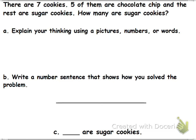Now this one is on your paper. I'm going to read this one to you and I want you to solve this one on your own. There are 7 cookies. 5 of them are chocolate chip and the rest are sugar cookies. How many are sugar cookies? I want you to do cubes, draw your picture, do your number sentence and your statement. Pause the video, and then you can press play whenever you are ready to check your work.